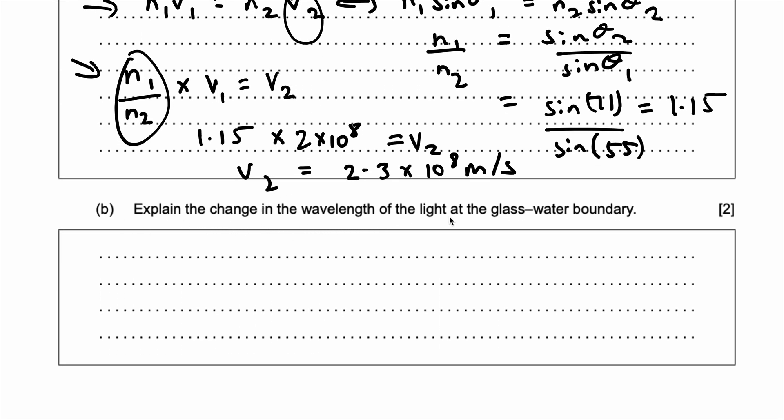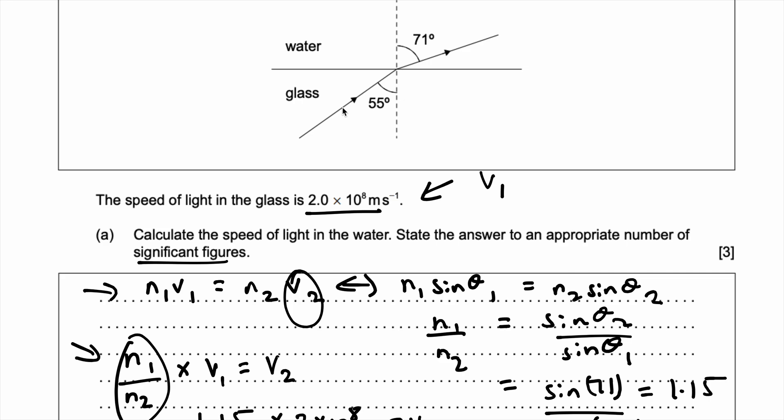Okay, part b. Explain the change in the wavelength of the light at the glass water boundary. Now what's actually happening? Why is there a change in wavelength? Well, do you see that there's a change in angle? There's a change in angle as it goes from one medium to the other. Now why exactly does this happen is because these two mediums have different refractive indexes. Now when the second angle is further away from the normal which is this middle line right there, that means that at the second medium the velocity of the light traveling through it is greater.